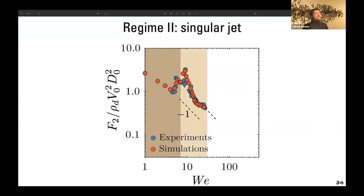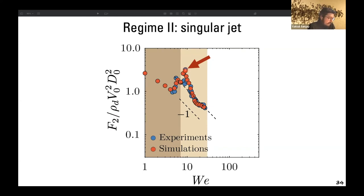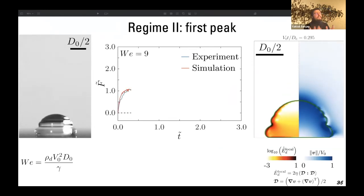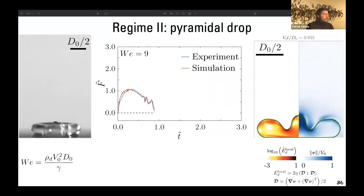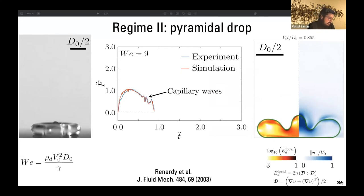There is a second regime between roughly Weber 10 and 30, which we call the singular jet regime. At Weber number 9, for example, the second force peak is actually higher than even the first one — the first peak is roughly 0.81 but these values exceed one. As we move forward in time we also see many capillary oscillations, reminiscent of pyramidal-type drop rebounds studied in the literature.